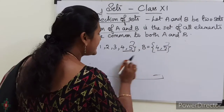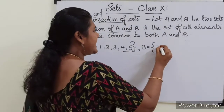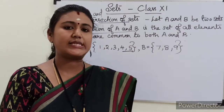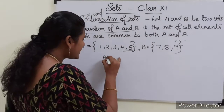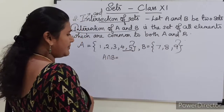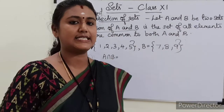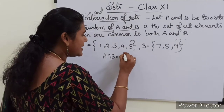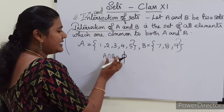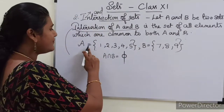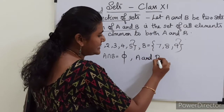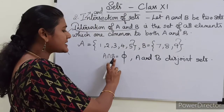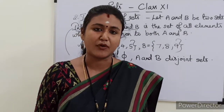Now another example: A is equal to {1, 2, 3, 4, 5} and B is equal to {7, 8, 9}. Here if you see, when you calculate A intersection B, is there any common element for both set A and B? No, we don't have any common elements. So in this case we can write A intersection B is the null set.